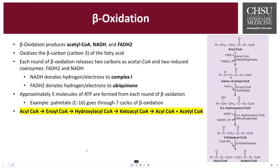Beta-oxidation is a metabolic pathway that occurs in the mitochondria and is responsible for breaking down fatty acids to produce energy. During beta-oxidation, the beta-carbon, which is carbon-3 of the fatty acid, is oxidized. This process involves a series of four enzymatic reactions that repeat until the entire fatty acid is broken down. Within each round, two carbons are sliced off from the fatty acid chain.